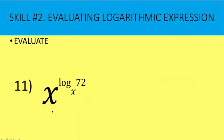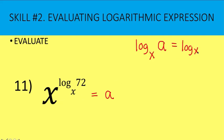What is the value of x raised to log to the base x of 72? Since x is already the variable, let's equate this value to a. Writing in logarithmic form: log to the base x of a equals log to the base x of 72. Since log base x appears on both sides, a must equal 72. So this entire expression equals 72.